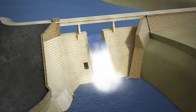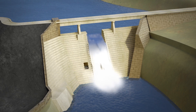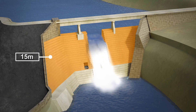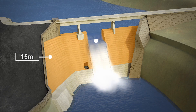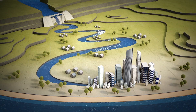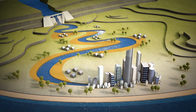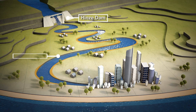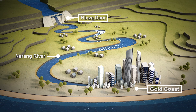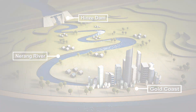After an upgrade in 2010, Hins Dam can now temporarily store more flood water due to a 15 metre increase in the dam wall and a narrow, low level spillway. This has significantly reduced the flood risk for thousands of houses near the Narang River. A much wider high level spillway also means the dam can safely pass extreme floods.